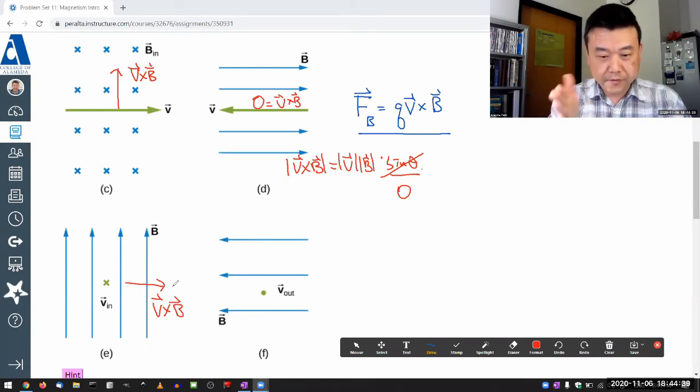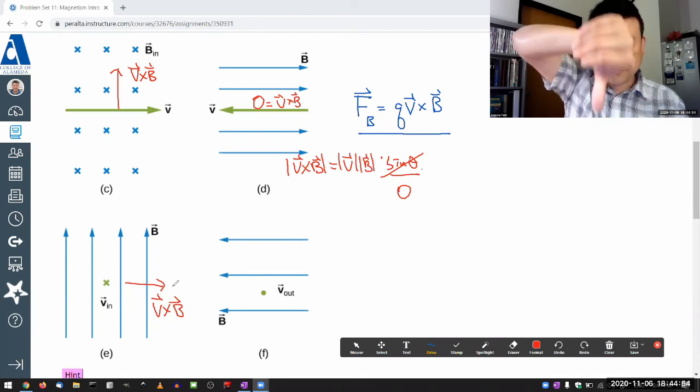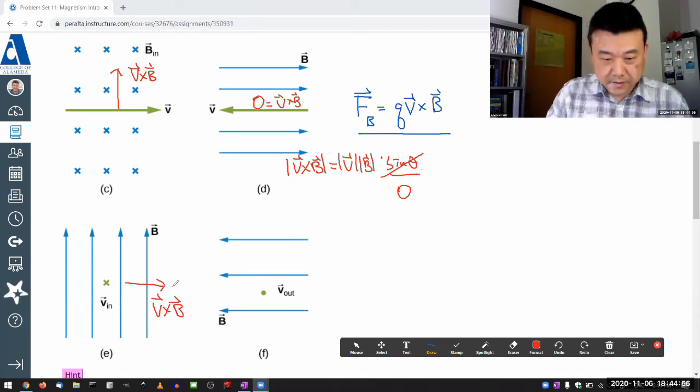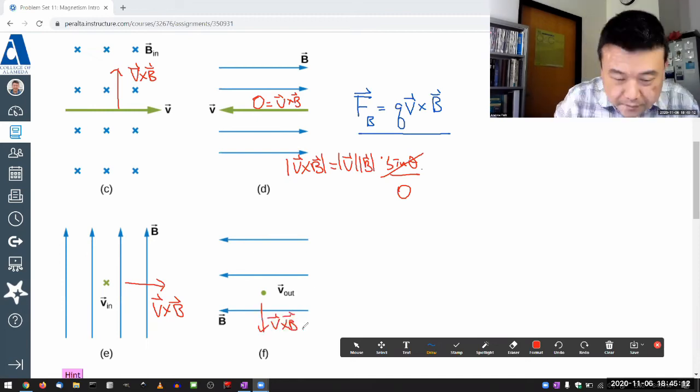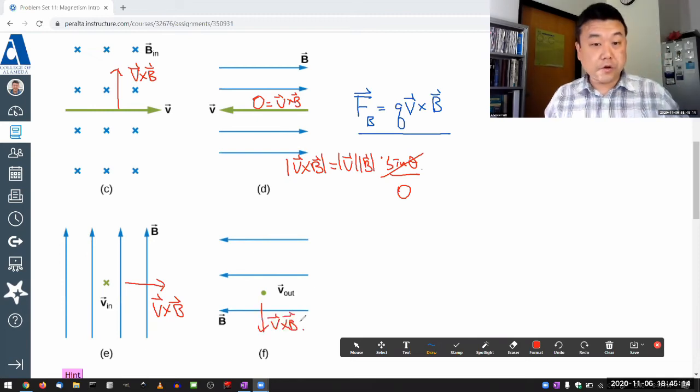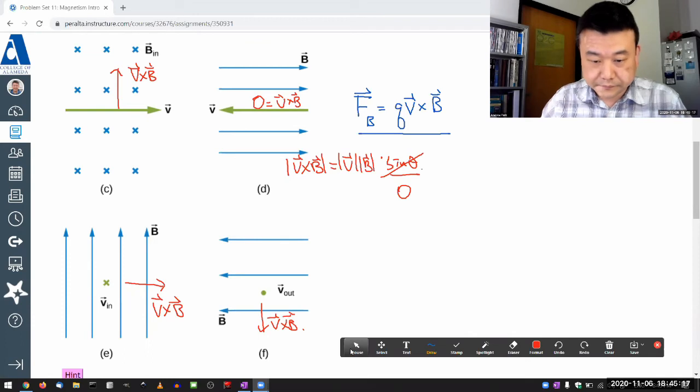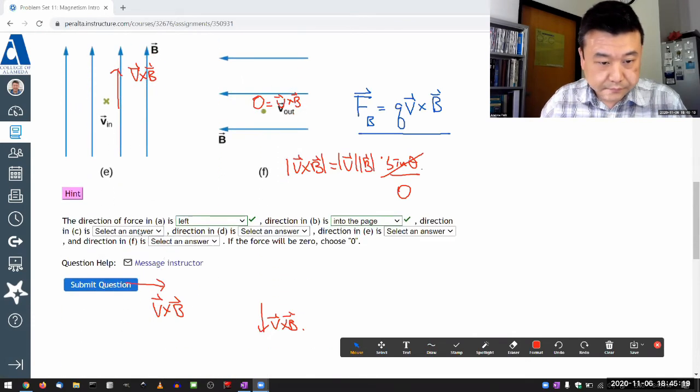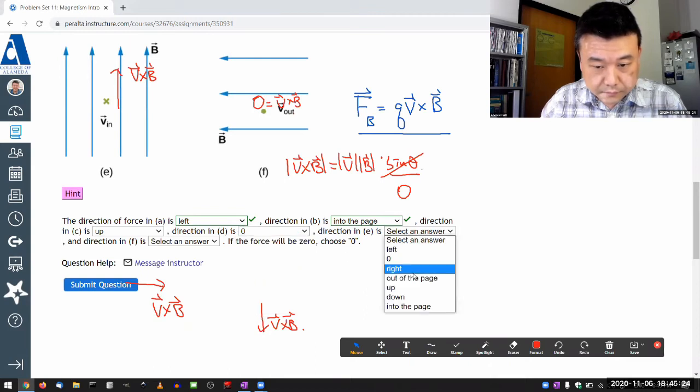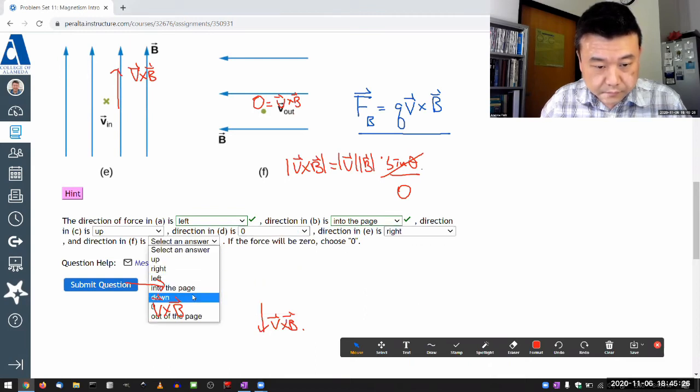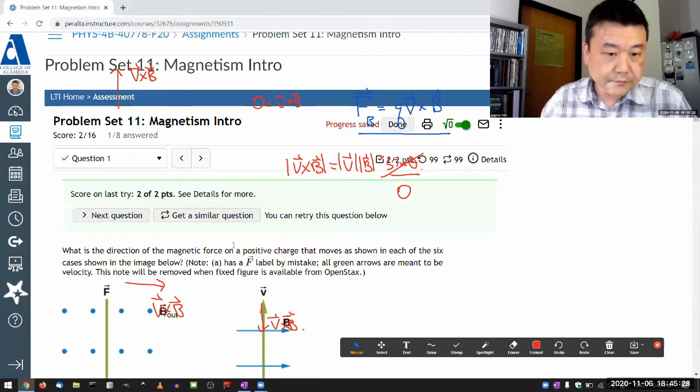Let me do F. That's a V coming out of the page, and I orient my fingers so that I can curl my fingers in the leftward direction. So my thumb points down. So that's V cross B. So up, zero, right, down. That's it. It's a good practice to get.